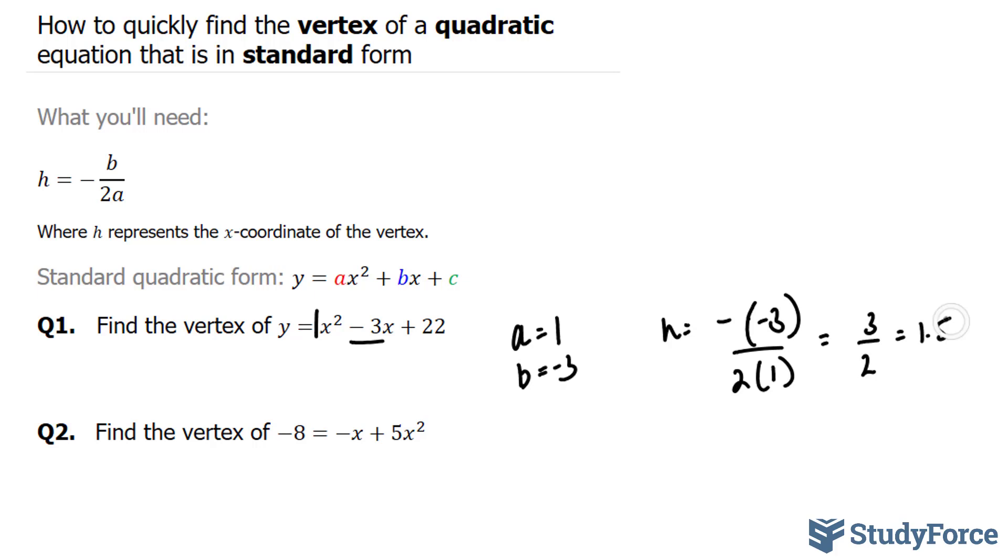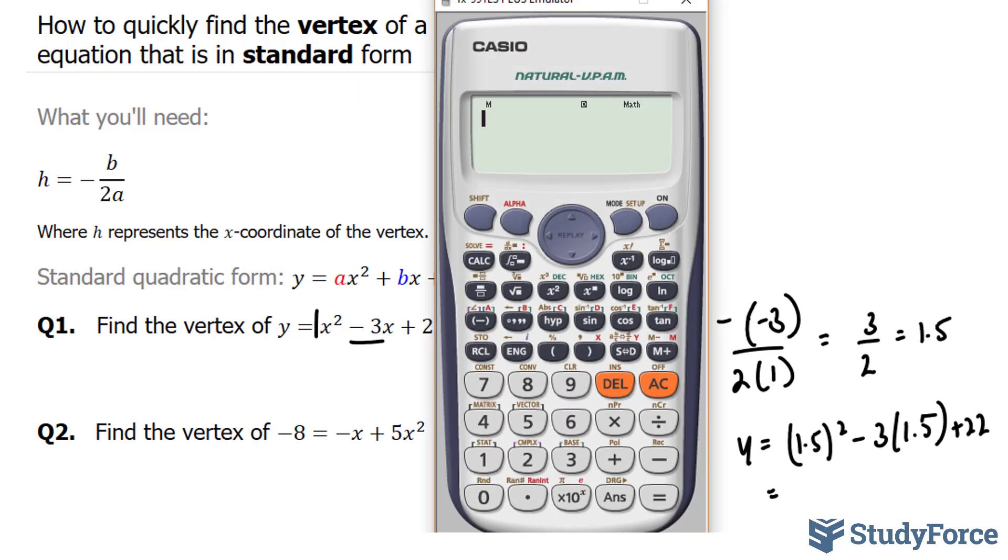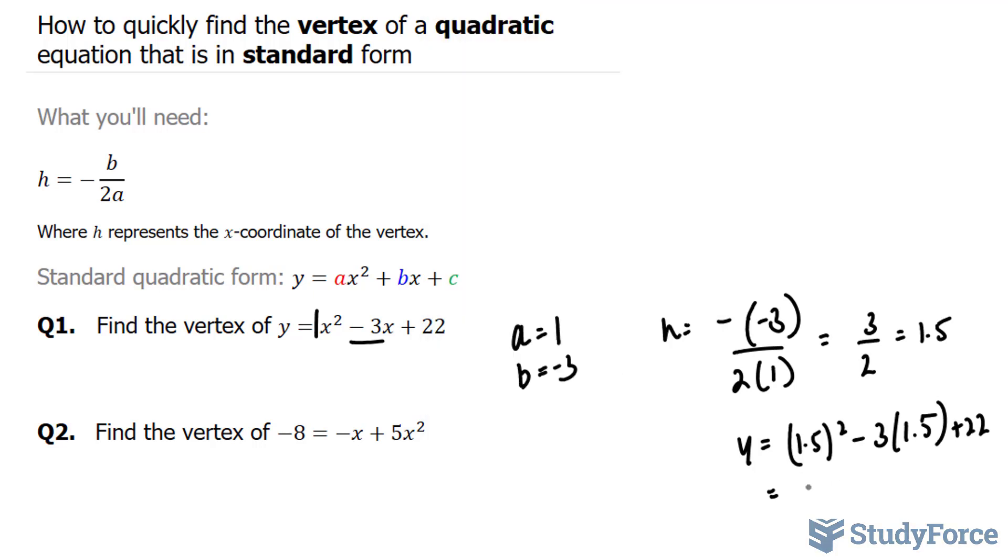So to get our y-coordinate, we're going to substitute this number into our formula, where we have y is equal to 1.5 to the power of 2, minus 3 times 1.5, plus 22. Using our calculator now, 1.5 to the power of 2, minus 3 times 1.5, plus 22, gives us exactly 19.75.